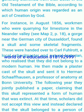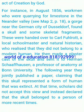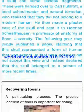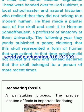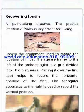For instance, in August 1856, workers who were quarrying for limestone in the Neander Valley, near the German city of Düsseldorf, found a skull and some skeletal fragments. These were handed over to Karl Fuhlrott, a local schoolmaster and natural historian, who realized that they did not belong to a modern human. They then made a plaster cast of the skull and sent it to Hermann Schaffhausen, a professor of anatomy at Bonn University. Following the year, they jointly published a paper claiming that the skull represented a form of human that was extinct. At the time, scholars did not accept this view and instead declared that the skull belonged to a person of more recent times.